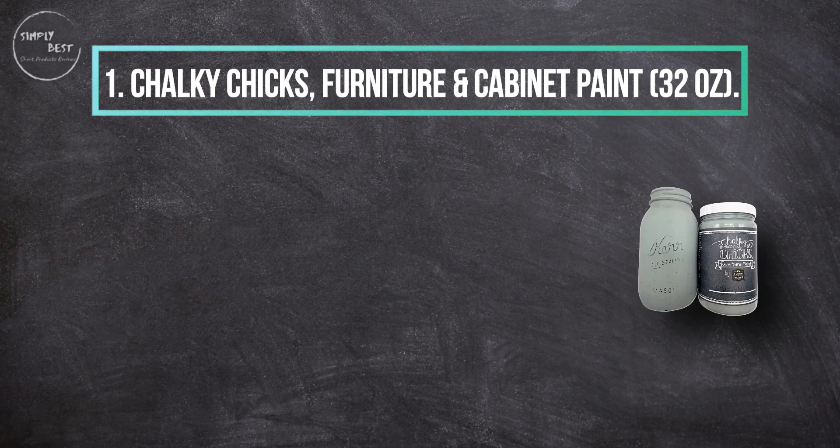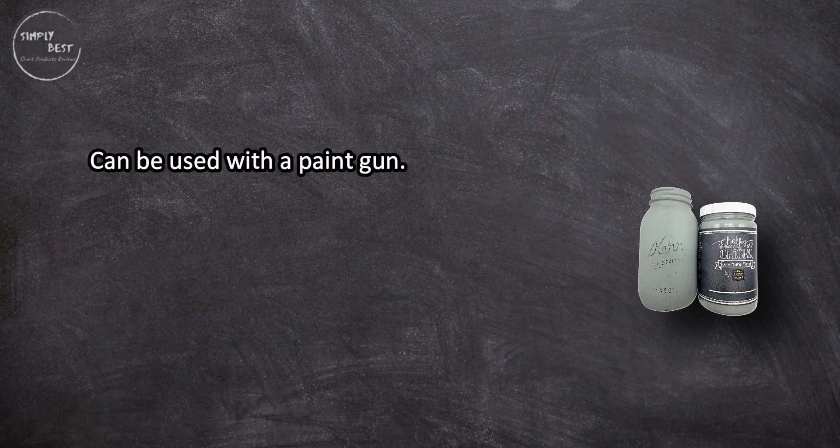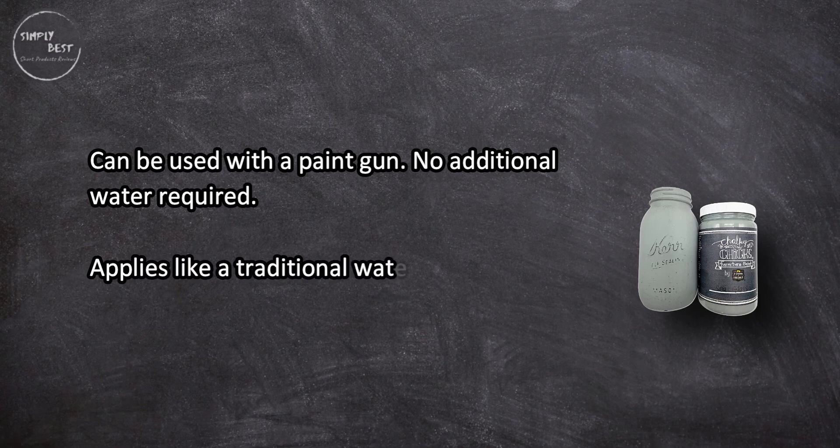At number one: Chalky Chicks furniture and cabinet paint, 32 ounces. Can be used with a paint gun, no additional water required. Applies like a traditional water-based paint.